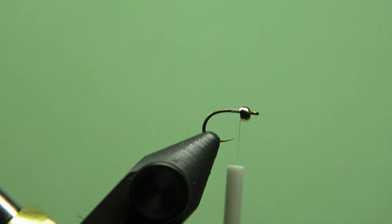This fly is pretty much tied with Superhair. Superhair was used a lot back in the day for saltwater patterns. It's kind of lost a little bit of its flavor and a lot of its fans, but you can still make some saltwater patterns with it.